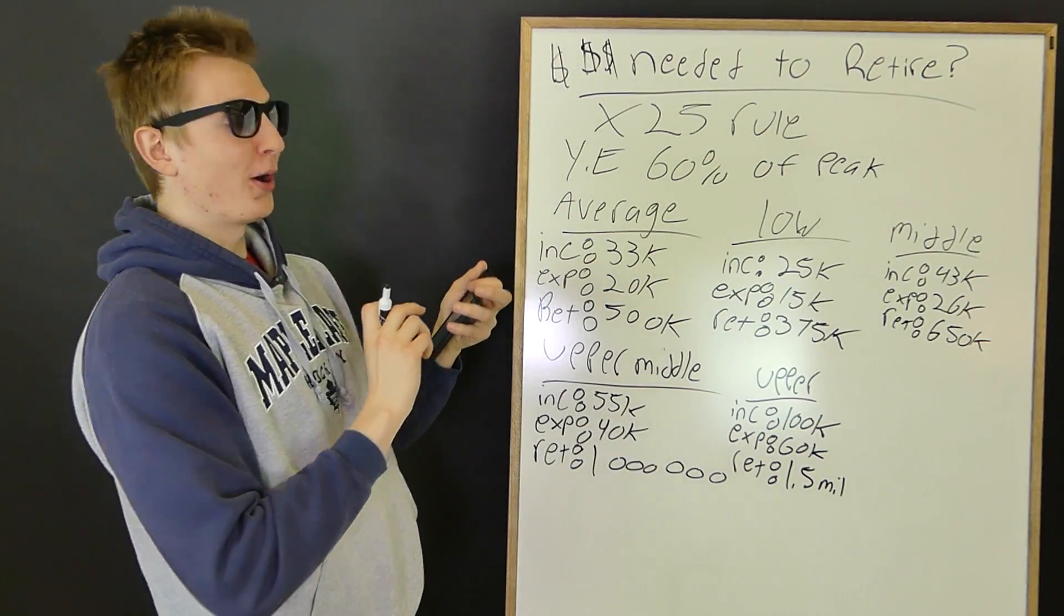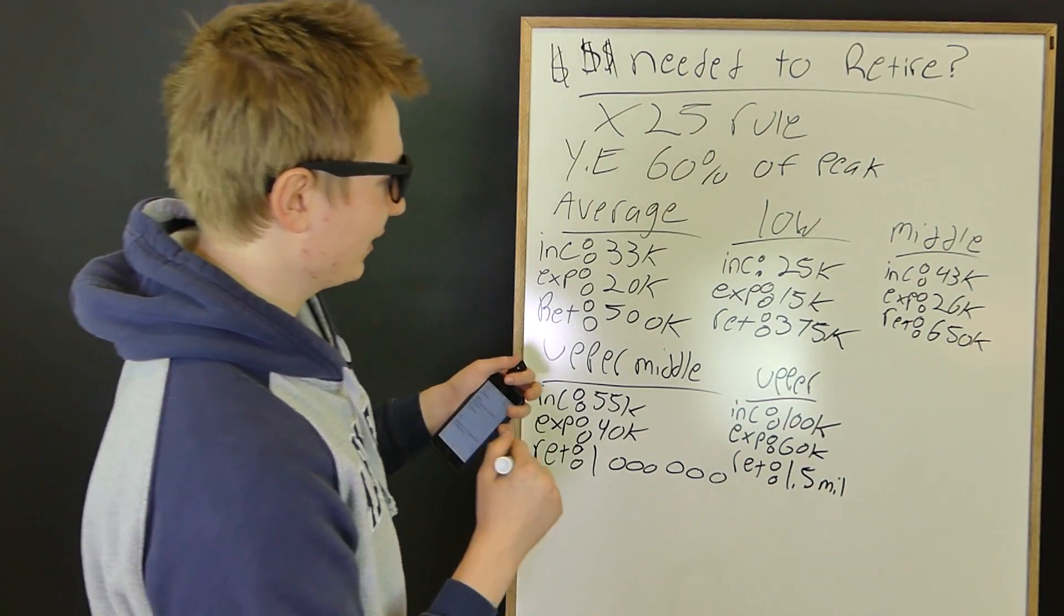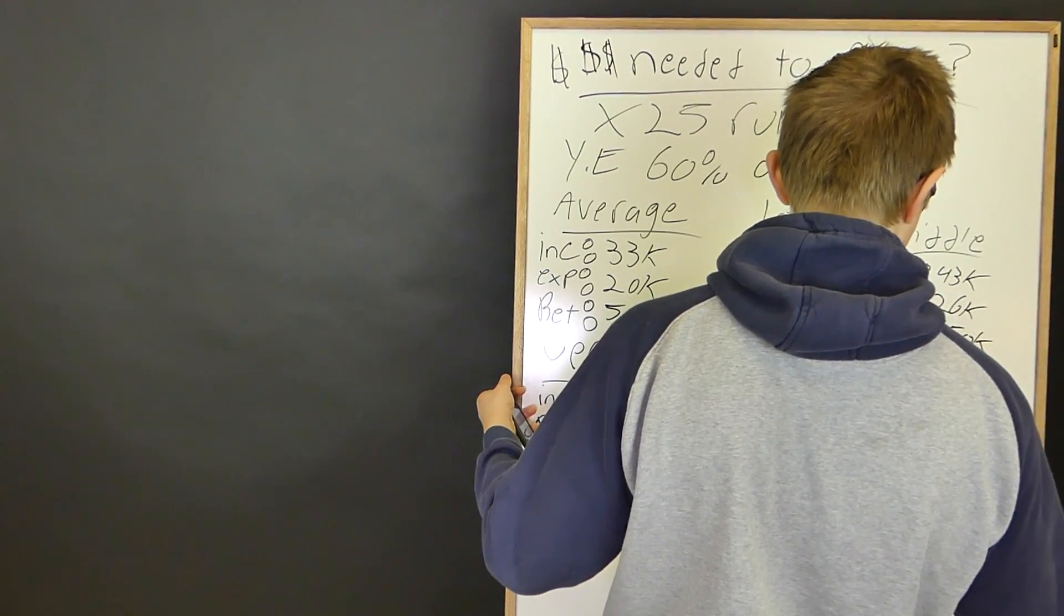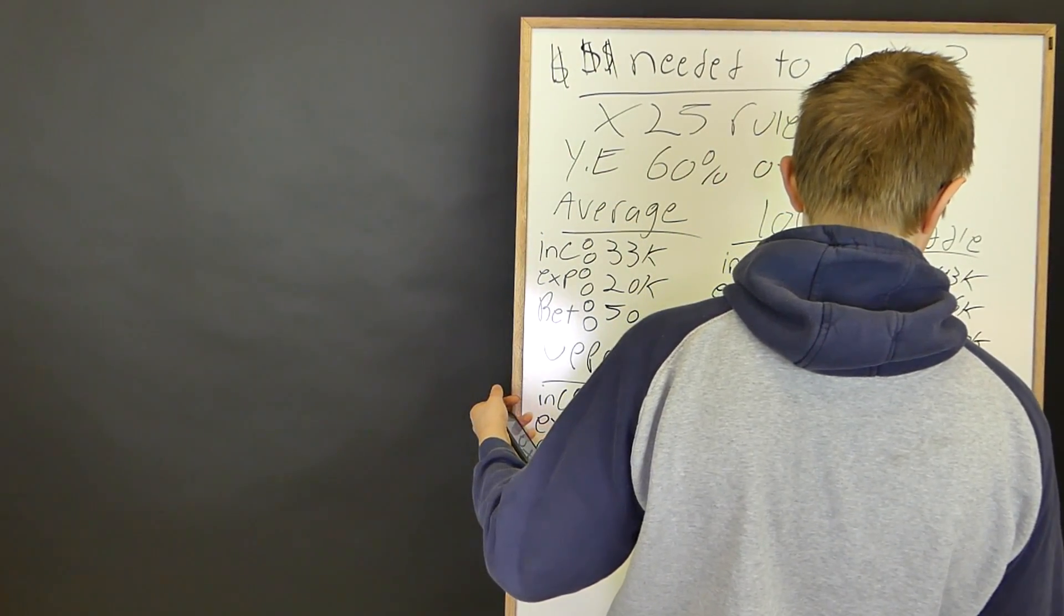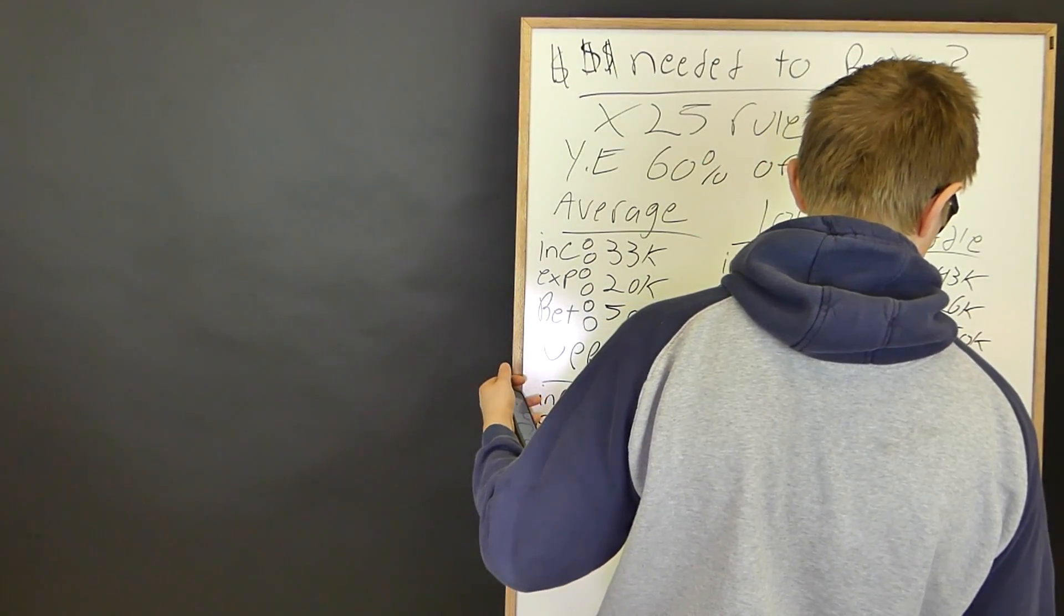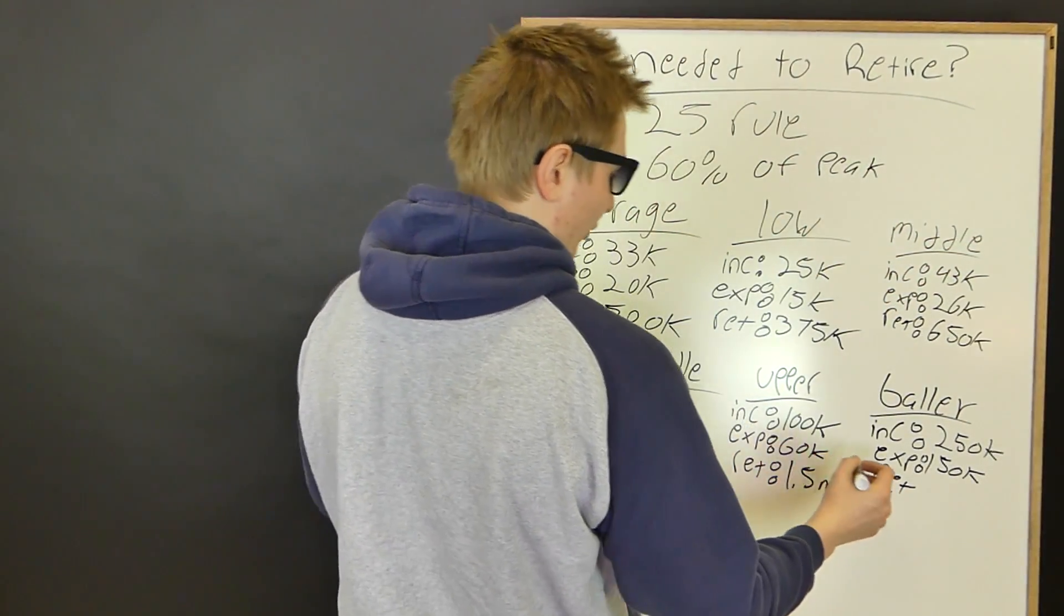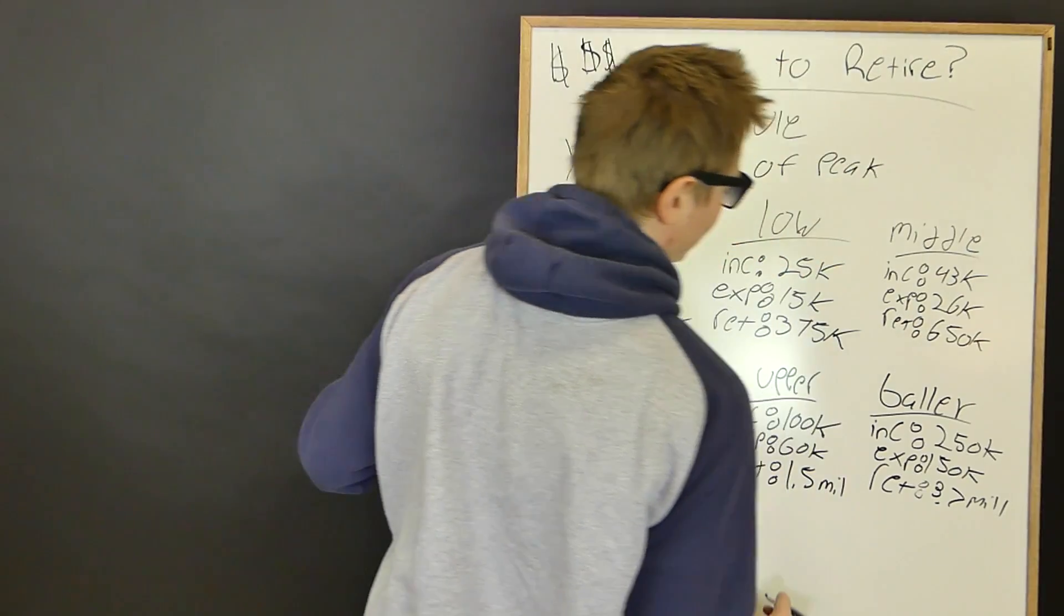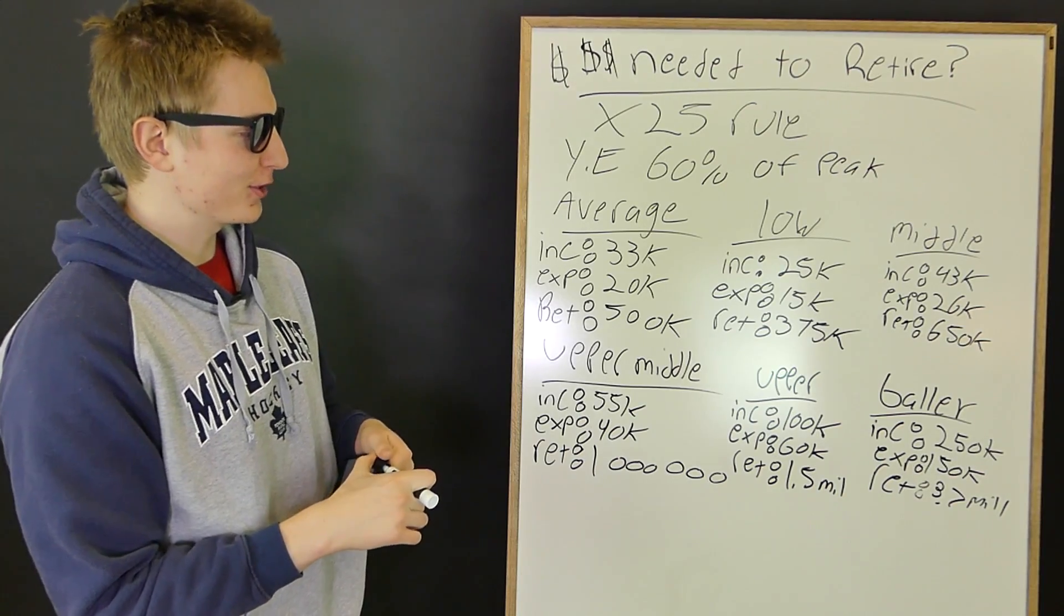And now we're going to move on to balling. If you're a baller, this is the next level up. So if you're a baller, you're making about over $250,000. So we're going to do baller. You're close to the 1%. Your income's $250,000. Your expenses would be what? $150,000. You need an estimated for retirement about $3.7 million. How about that? $3.7 million for retirement for someone who's balling.